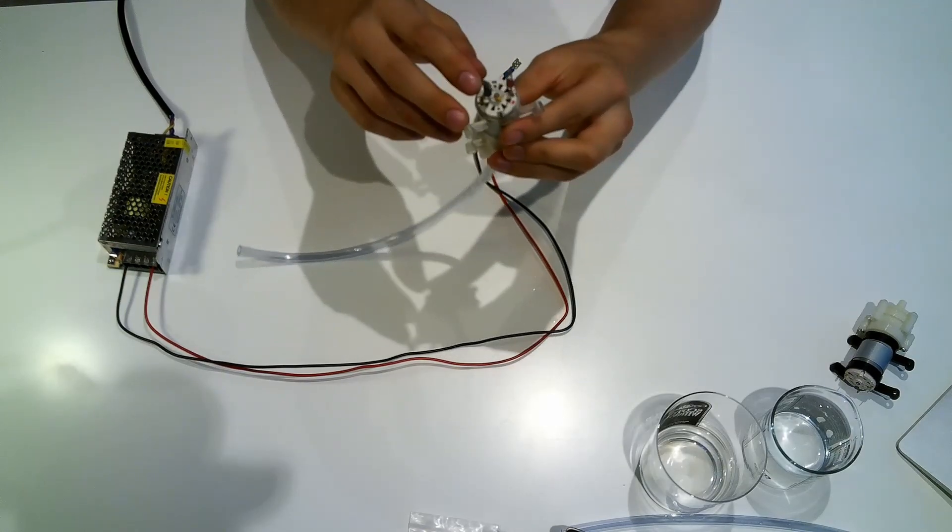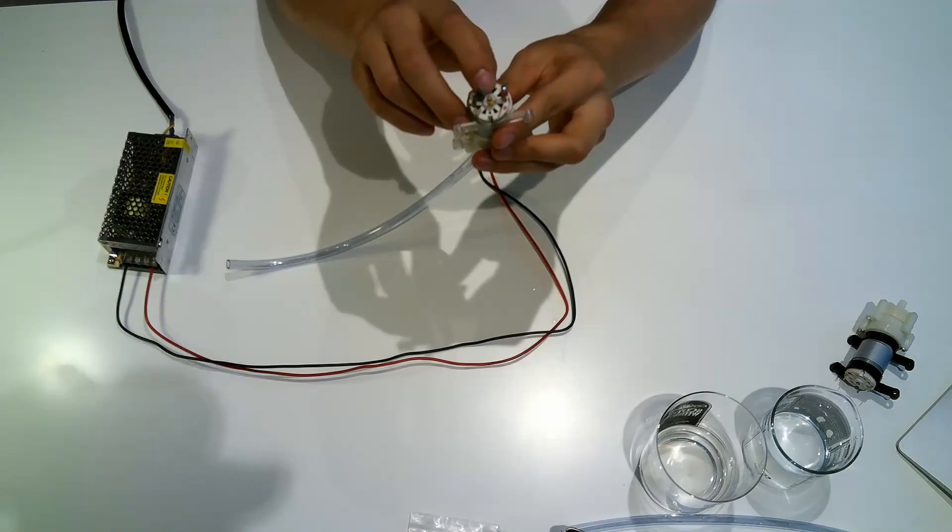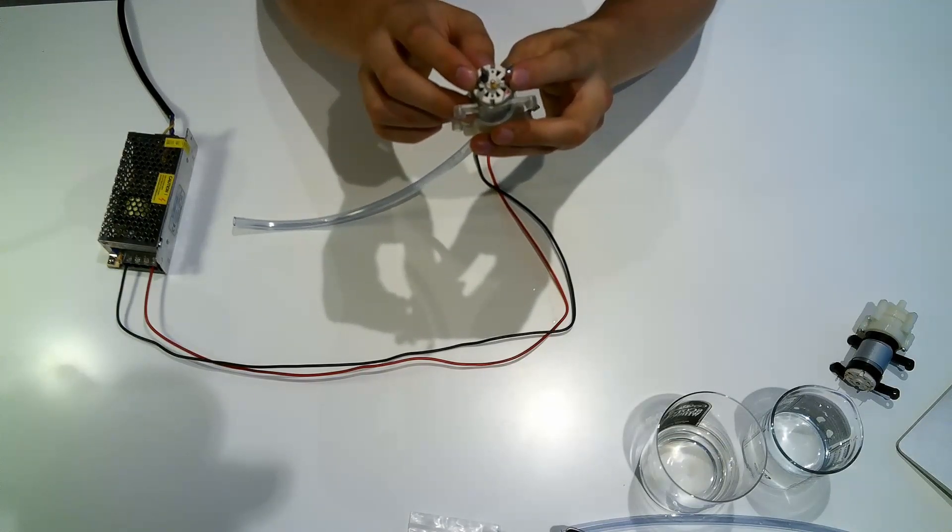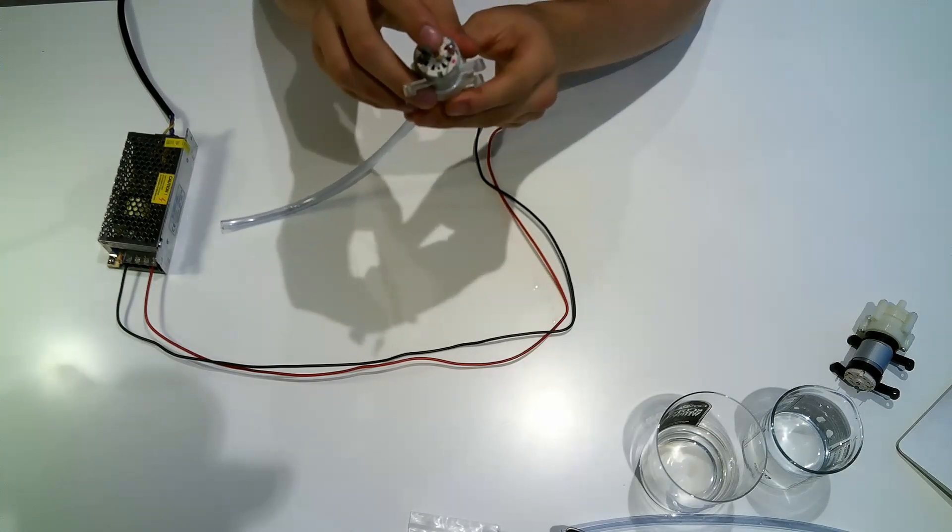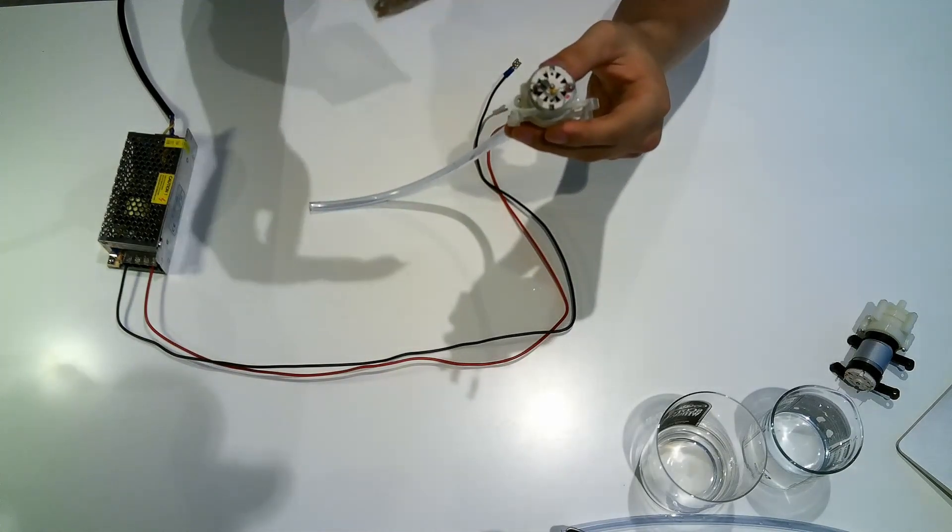So to counter the interference, you should really solder a one microfarad capacitor between the two terminals. This is also a really cheap solution. I bought hundreds of these capacitors on AliExpress for around one dollar twenty cents.